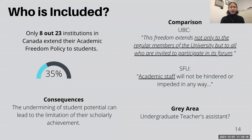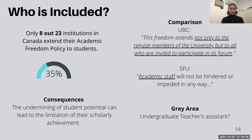Through this comparative analysis, it has been revealed that from the 23 higher education institutions in Canada that we examined, only eight explicitly extend their academic freedom policy to students, while the rest limit academic freedom to faculty members.